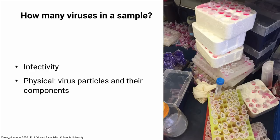Once your experiment is over, you have a supernatant. You'd like to know how much virus is there — what we call the virus titer. There are two ways to do this: you can measure infectivity, or you can measure physical properties such as particles and their components. The most important in my view is infectivity, but sometimes you can't do that, so we'll talk about both.